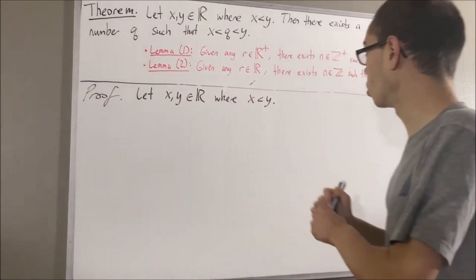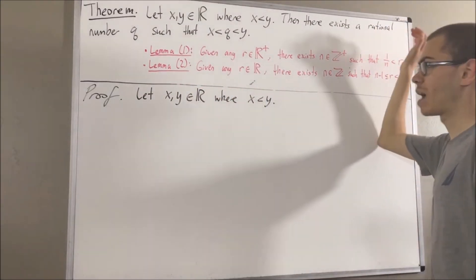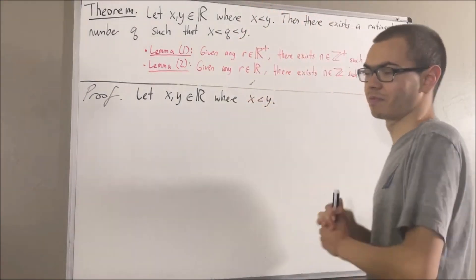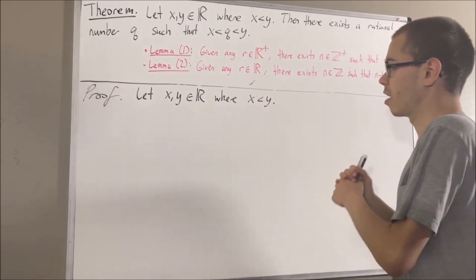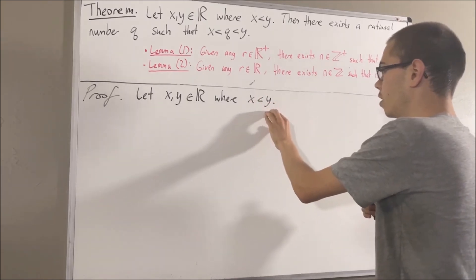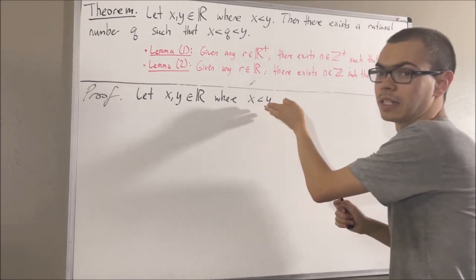From here, our goal is to show that there is a rational number between x and y, but not equal to x or y. To start, since x is less than y, this tells us that y minus x is greater than zero.